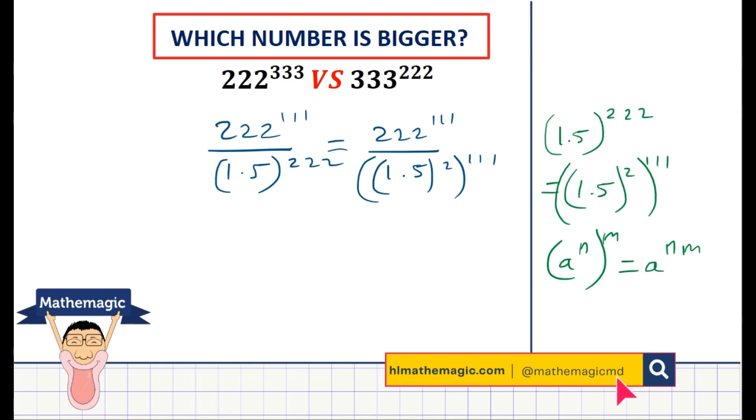And so now the numerator and the denominator are to the same power, and so simplifying one step further before we do the final step, 222 to the power 111 divided by 1.5 squared, which is 2.25 because 15 squared is 225. So this is 2.25 to the power 111.